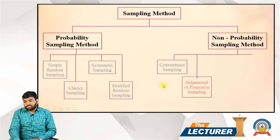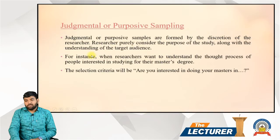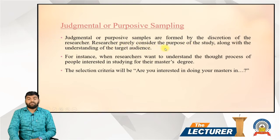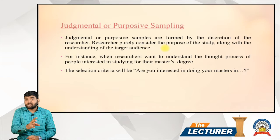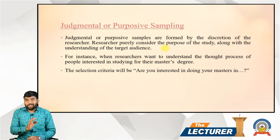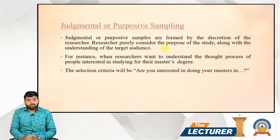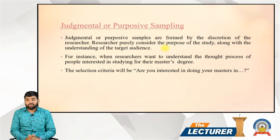Another method is judgmental or purposive sampling. In this method, the sample is formed by the discretion of the researcher. The researcher purely considers the purpose of the study along with their understanding of the target audience and the main objectives of the research. For instance, when a researcher wants to understand the true proportion of people interested in studying for a master's degree.